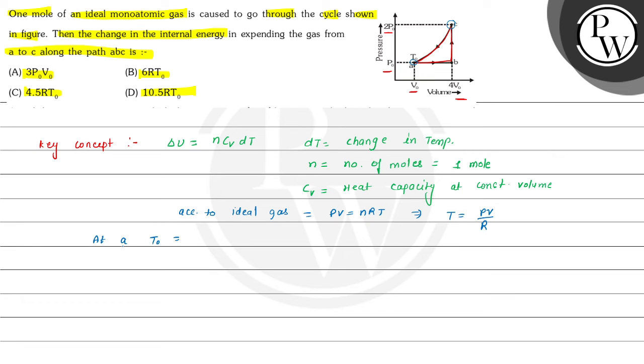So at A, T₀ can be written as P₀V₀ because here pressure is P₀ and the volume is V₀. So P₀V₀ divided by R.